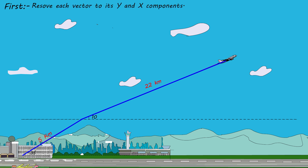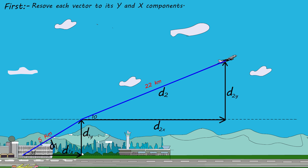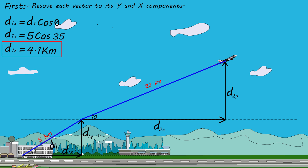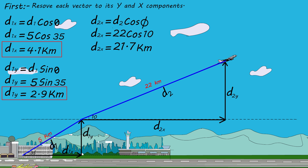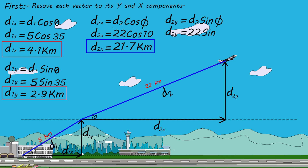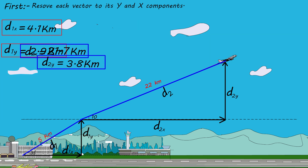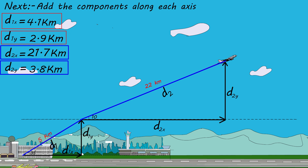To solve this, we first resolve each vector into x and y components. For the first part: d1x = 5 cosine 35 = 4.1 km; d1y = 5 sine 35 = 2.9 km. For the second part: d2x = 22 cosine 10 = 21.7 km; d2y = 22 sine 10 = 3.8 km.